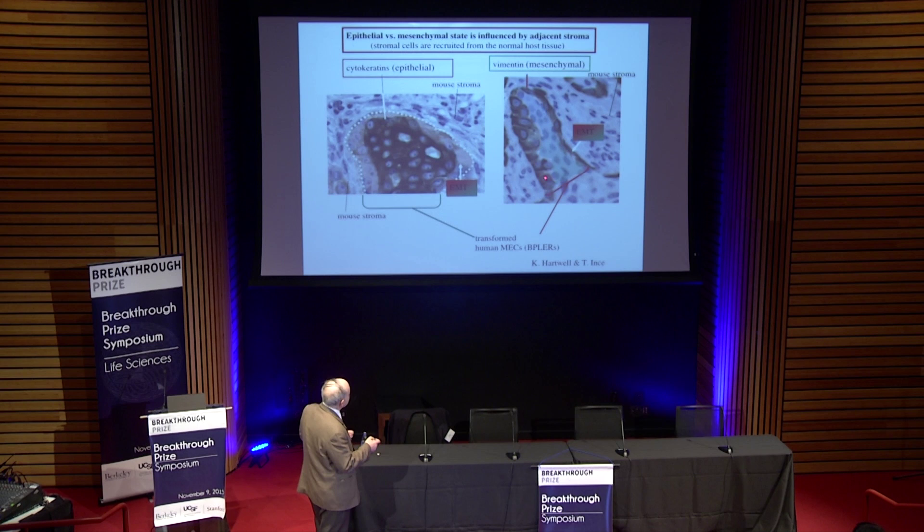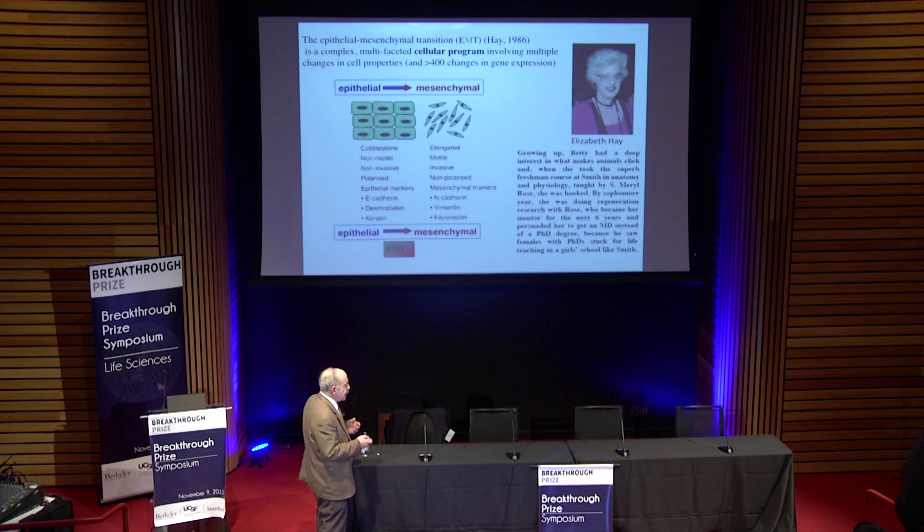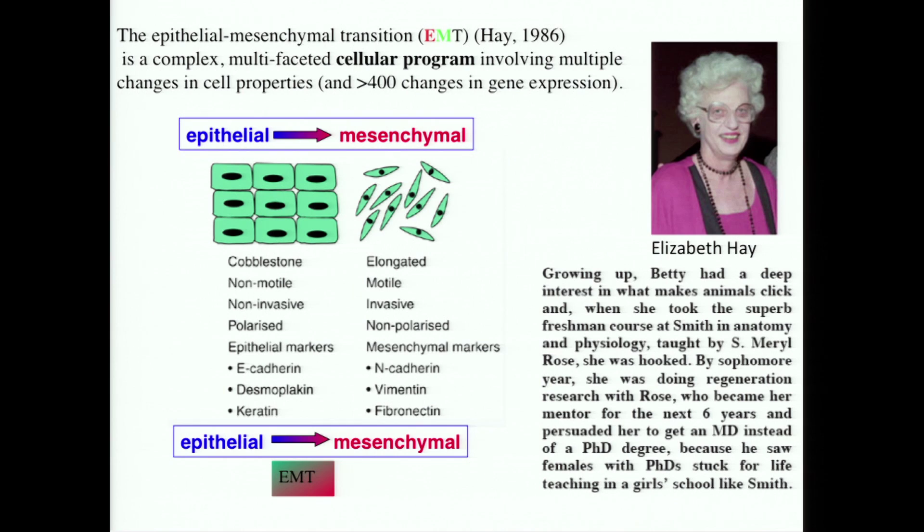Here one sees the converse process: a tongue of carcinoma cells that have now expressed the mesenchymal marker vimentin, which the cells in the center of this tongue did not express. This cell biological program was described first in 1986 by Betty Hay, who was chair of cell biology at Harvard Medical School — or as they call themselves, the medical school in Boston, much to the distress of the other medical schools in Boston.